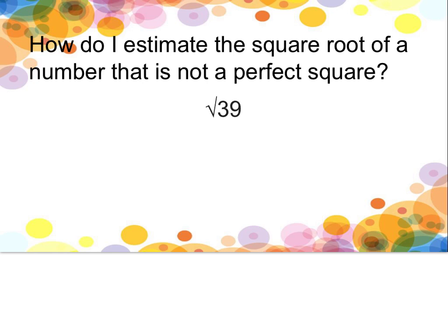We looked at our list of perfect squares and we found the perfect square less than 39 and the perfect square greater than 39. So the closest smaller perfect square is the square root of 36. The next square root is the square root of 49.